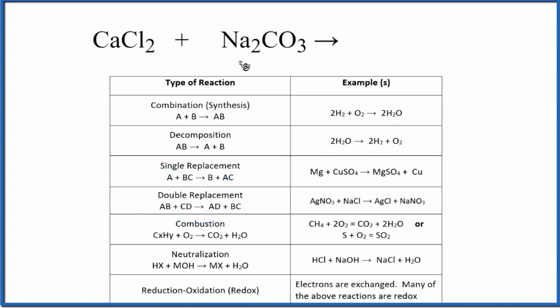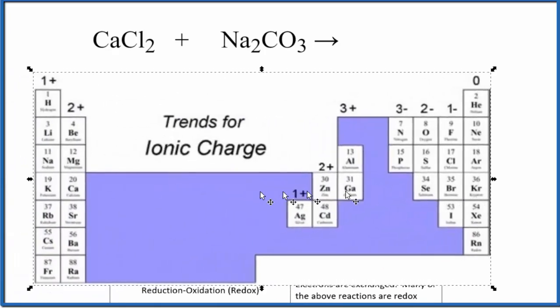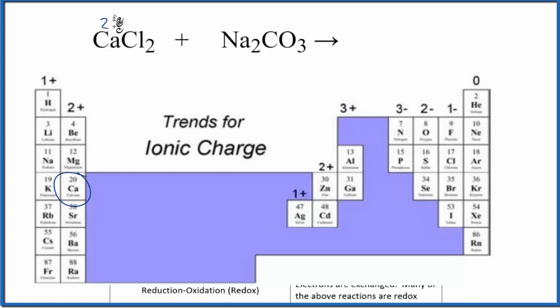Let's write the charges up here and see how that might look. We can look on the periodic table and see calcium right here in group 2, it has a 2+ ionic charge. Chlorine over here, 1-, and then sodium in group 1 has a 1+ charge. The carbonate won't be on the periodic table. You should memorize that CO3, the carbonate, is 2-.